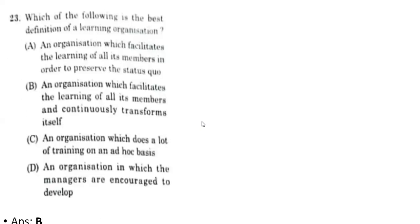Twenty-third question: which of the following is the best definition of a learning organization? The correct option is B — an organization which facilitates the learning of all its members and continuously transforms itself is the correct definition of a learning organization.